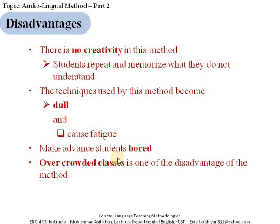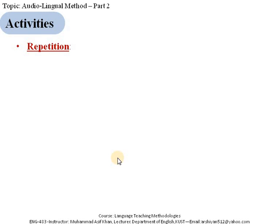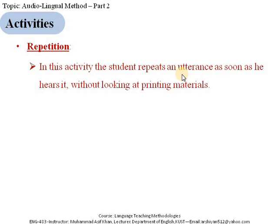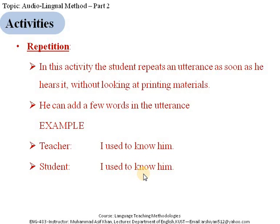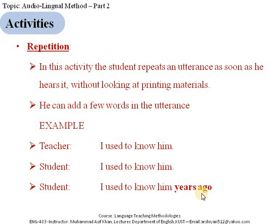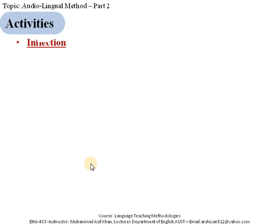Now let's move towards some of the activities used in this method. The first activity is repetition — the student repeats an utterance as soon as they hear it from the teacher or another source, without looking at printed material. The student may repeat it and has the option to add a few words; for example, if the teacher says 'I used to know him,' the student repeats that and can later add words like 'I used to know him years ago.'